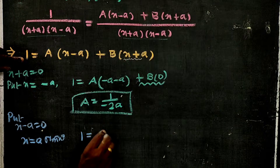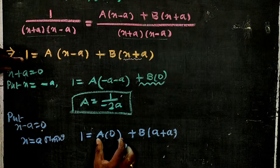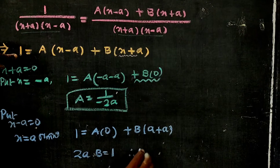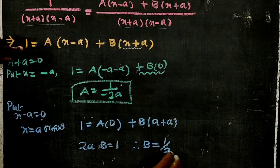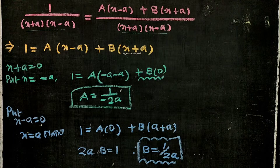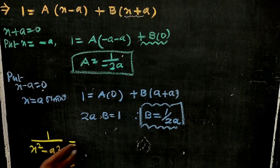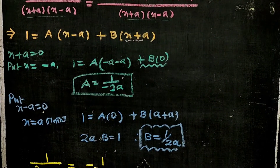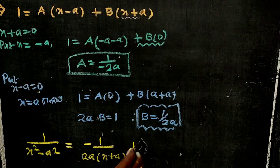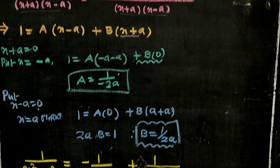Next, 1 is equal to A into (a plus a). Then 2a into B is equal to 1, so B is equal to 1 by 2a. Therefore, 1 by x² minus a² is equal to minus 1 by 2a into (x plus a) plus 1 by 2a into (x minus a). This is the answer.